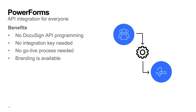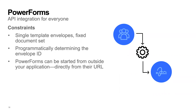What are the benefits of PowerForms? No DocuSign API programming — that's a big deal for many people. No integration key is needed. No go-live process is needed. And you have many features available, including importantly branding — you can brand the look and feel of the signing ceremony so it matches the rest of your application. As for constraints: PowerForm envelopes make use of a single template, and the documents to be signed are fixed, so you can't give different documents to different signers as you can easily do with direct API embedded signing. It can also be tricky to programmatically determine the envelope ID that was actually signed, and you have to watch out for PowerForms being started from outside of your application.